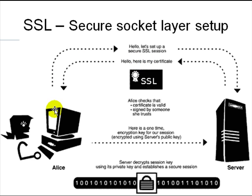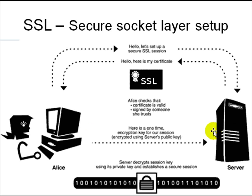Alice first checks that the certificate is signed by somebody she trusts — like checking an ID card signed by a trusted authority. If not, there is a chain of trust she examines until she finds a master certificate she trusts that has signed Google's certificate. Then she uses the public key in that certificate to create a shared secret, and the server likewise uses Alice's public key to create a shared secret key. After the SSL handshake, they both have a common shared secret key, which they use to encrypt data using symmetric encryption because it is very fast.